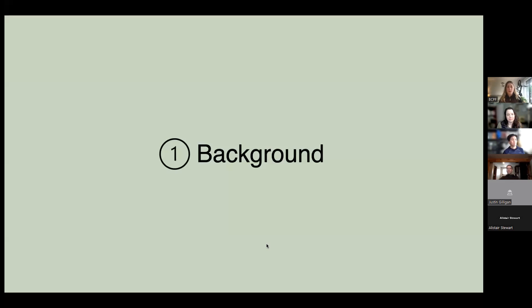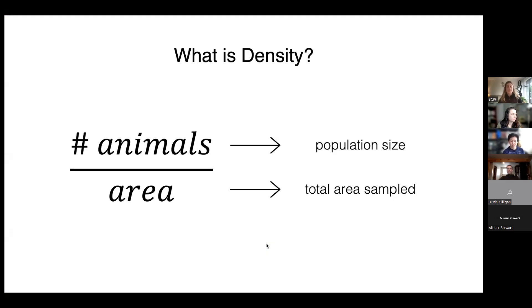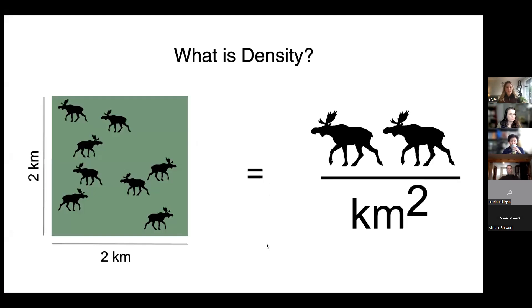We're going to start with some background to make sure everybody is on solid footing. First, let's define density — it's simply the number of animals per unit area: total population size divided by total area sampled. For example, in a two-kilometer by two-kilometer study area — four square kilometers — with eight moose, eight divided by four equals two moose per square kilometer. For wide-ranging or low-density animals, we might report in animals per hundred square kilometers.